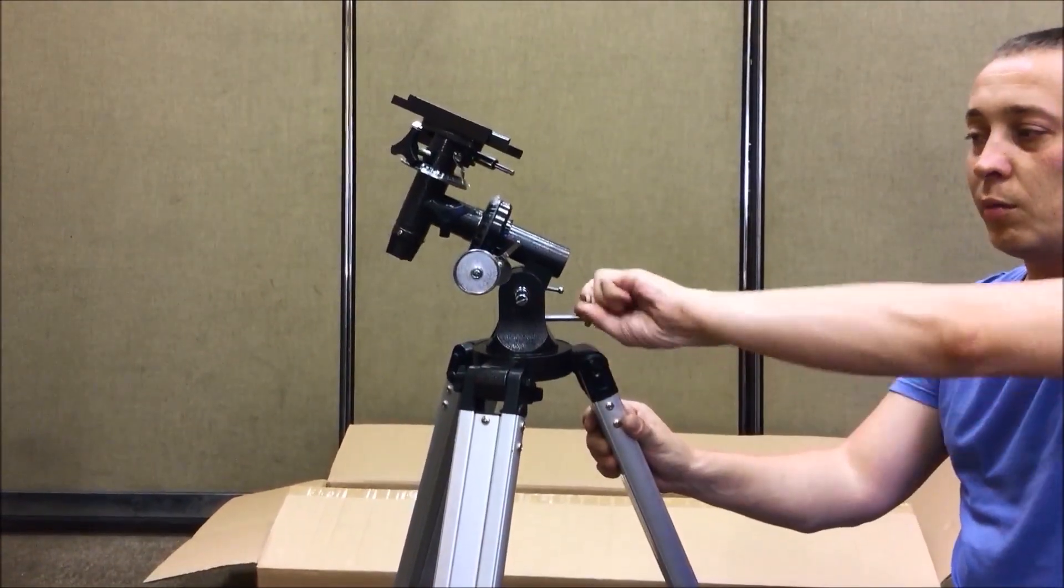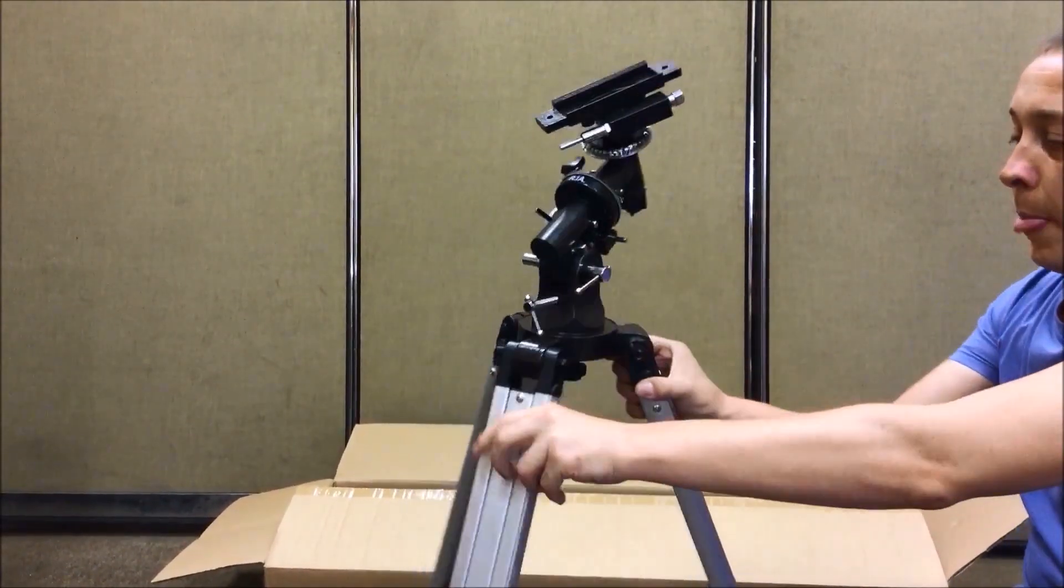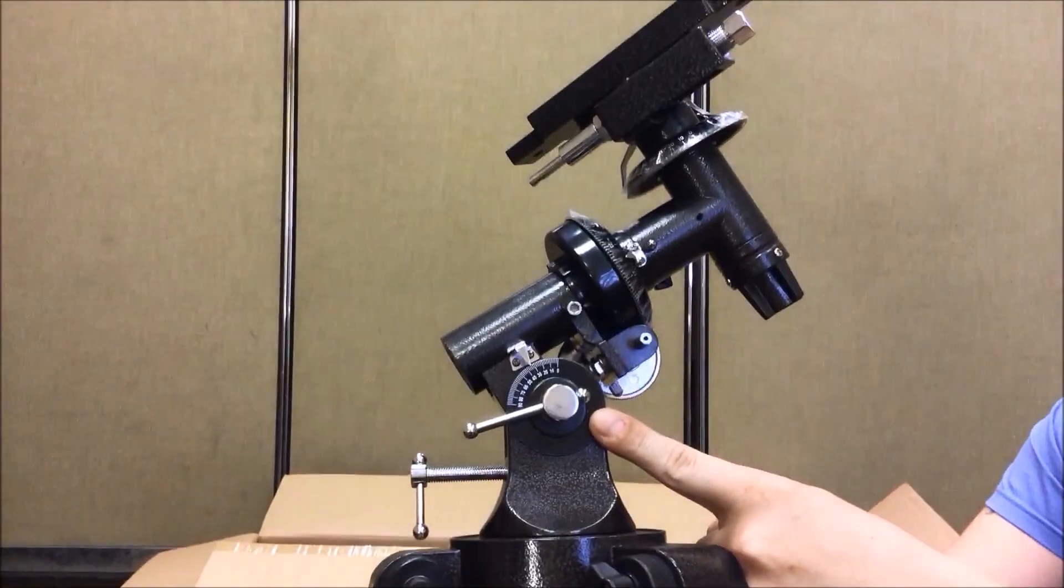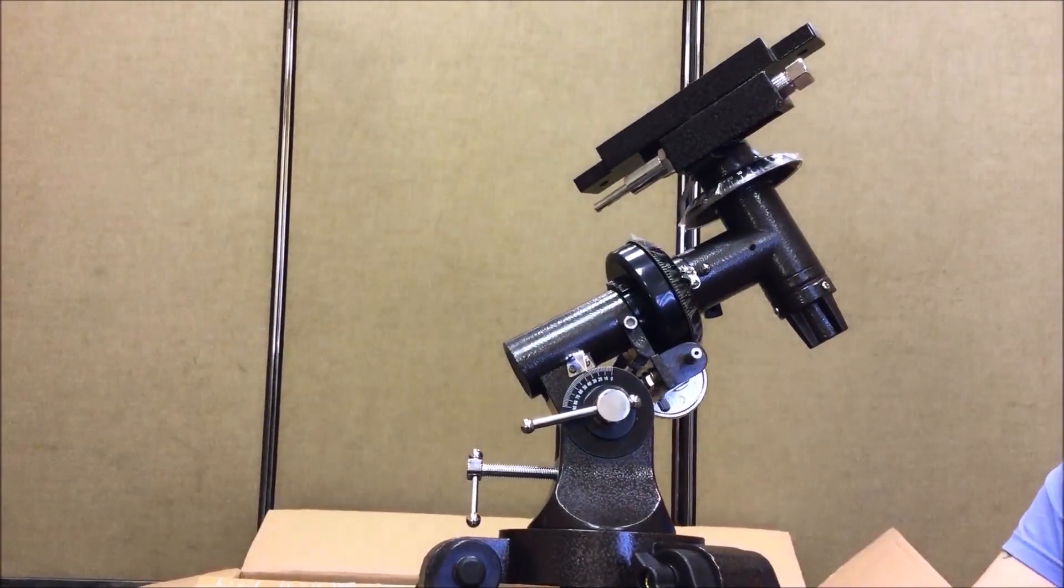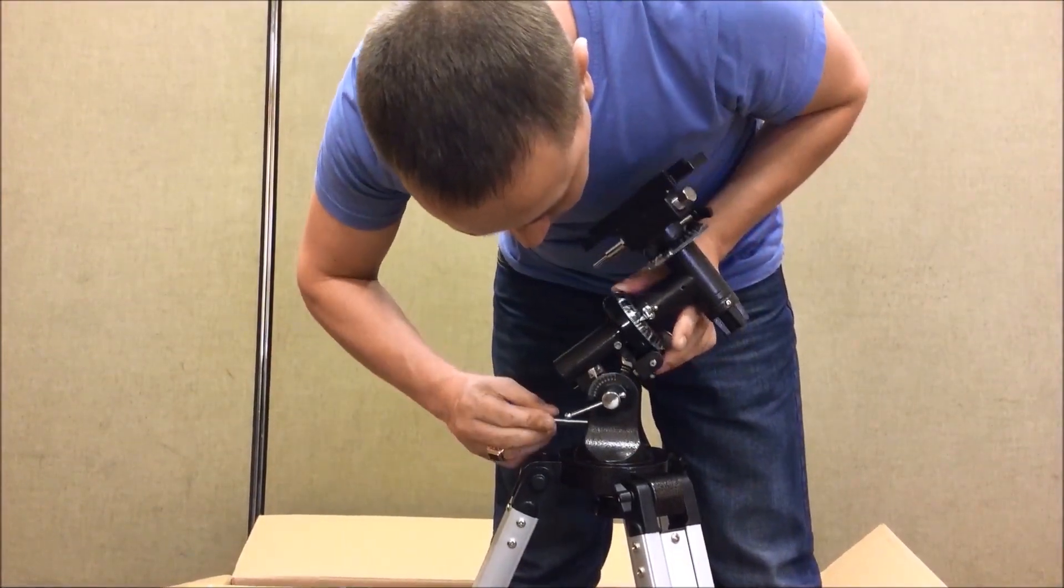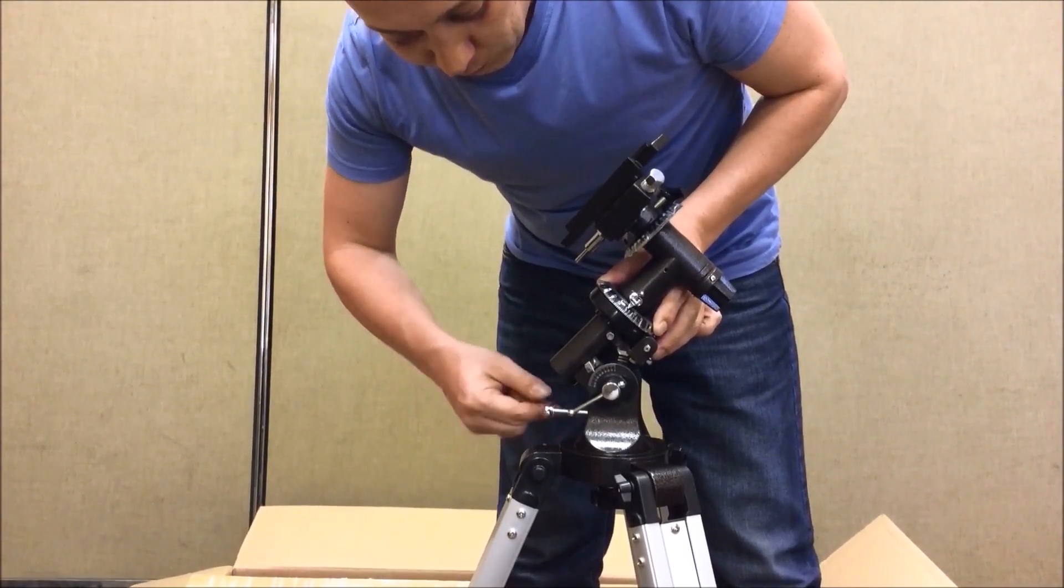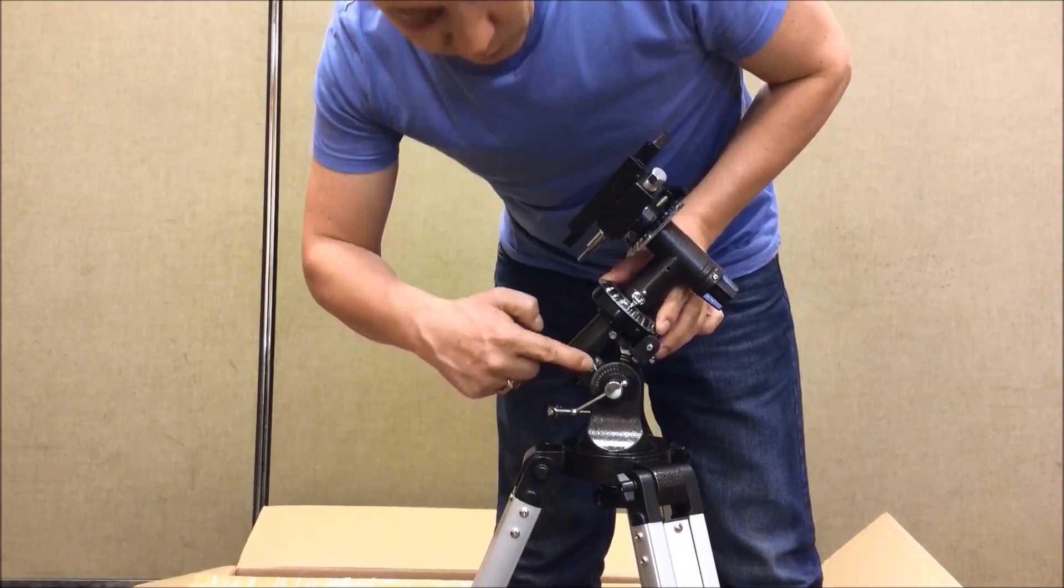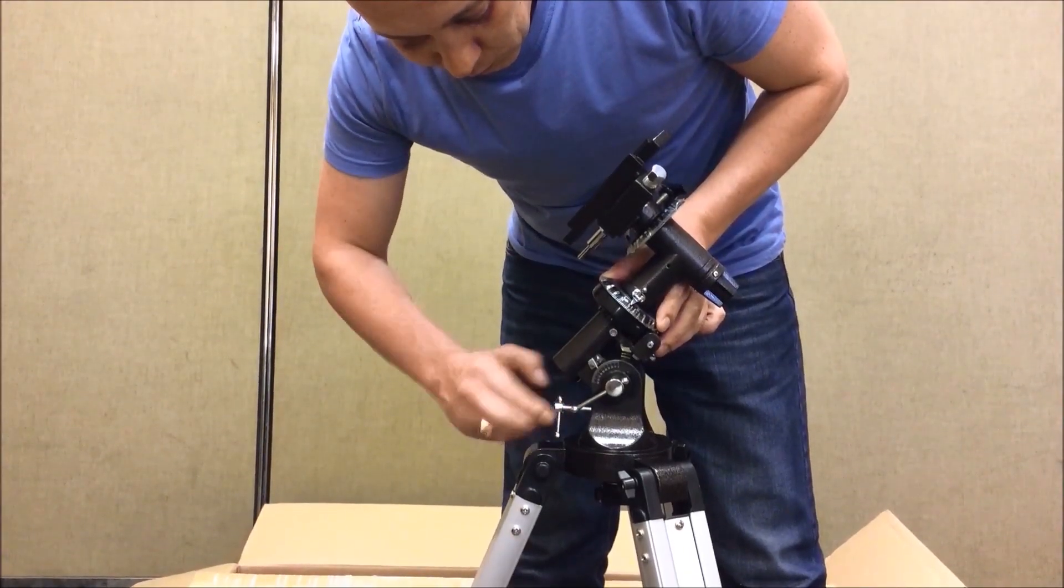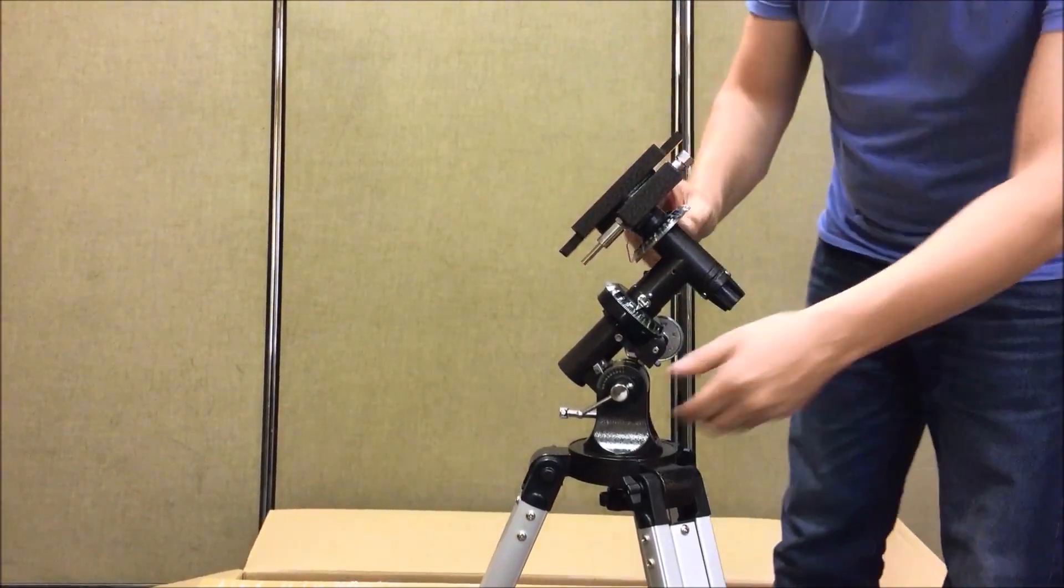Here is the knob used for the latitude adjustment of the mount. For your convenience the mount has a scale running from 0 to 90 degrees. Now we need to set the latitude of the observation spot. For this we align the pointer on the scale with the desired latitude and retighten the bolt so the mount doesn't lean forward. The pointer shows the selected latitude on the scale. Use maps.google.com to find out your current coordinates and worldtimezone.com to find your current timezone.